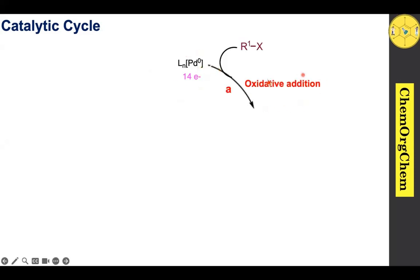Pd(0) then undergoes oxidative addition with either the aryl triflate or aryl halide, producing the corresponding 16-electron Pd(II) intermediate.